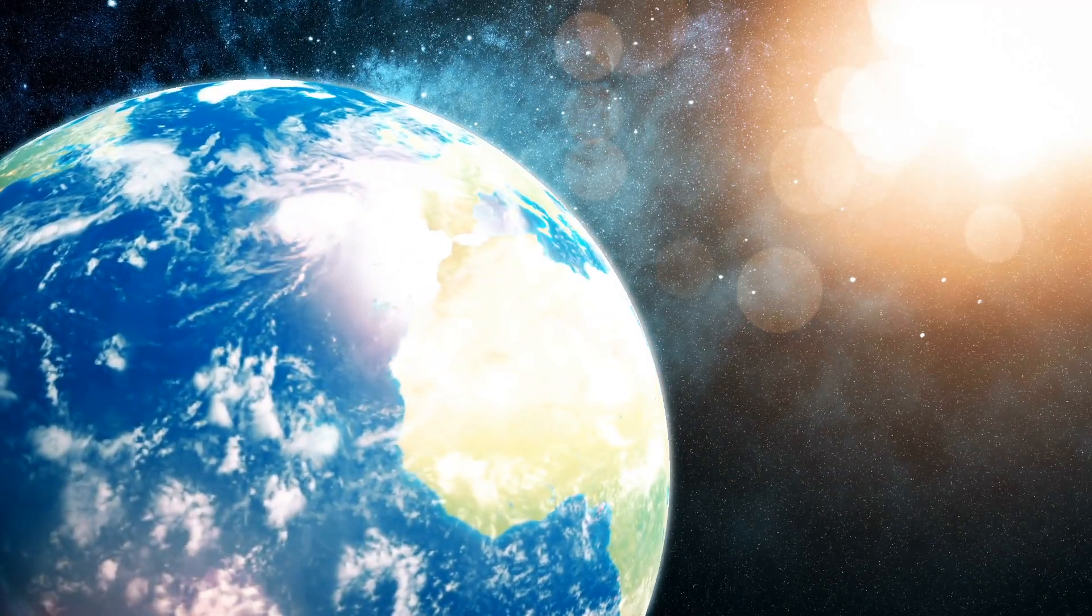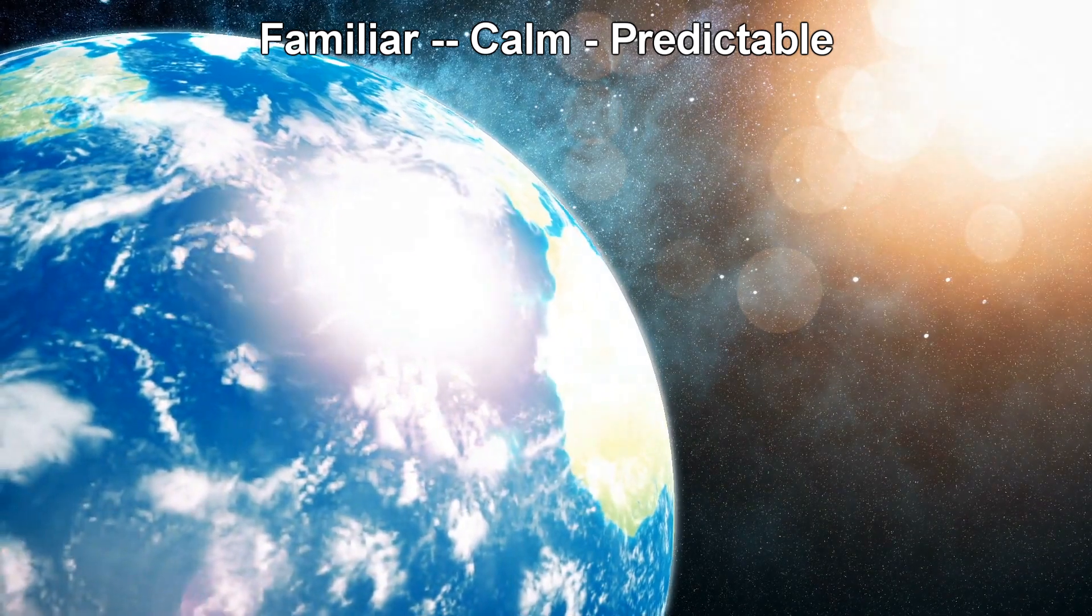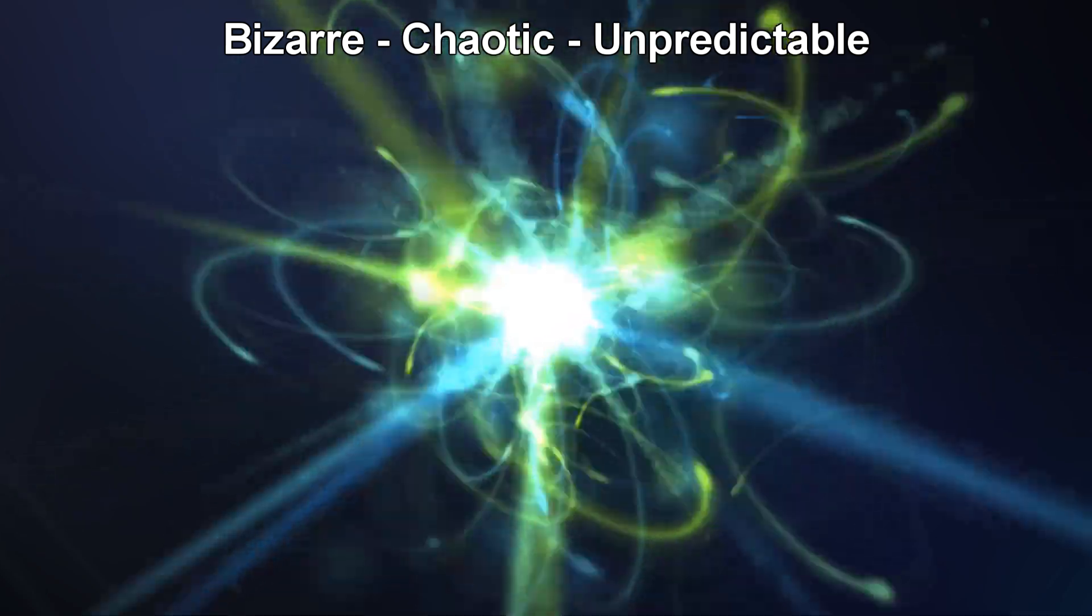There are two worlds that we live in. The world of the large, the world we can see, which is familiar, calm and predictable. And there's the world of the small, the world we can't see, the quantum world, which is bizarre, chaotic and unpredictable.